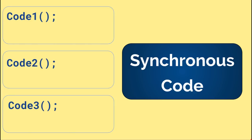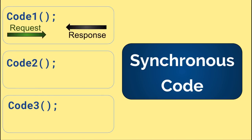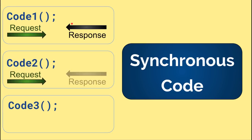With synchronous code, it's going to go through the statements and fire them off in an orderly fashion, executing code one, code two, code three, and so on. When synchronous code executes, it sends out a request, then it waits for the response to come back. And when it gets that response, it handles it and moves on to the next code statement.